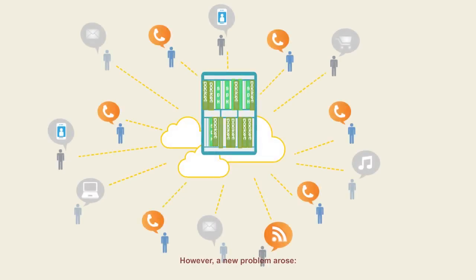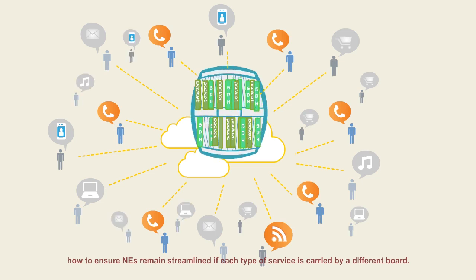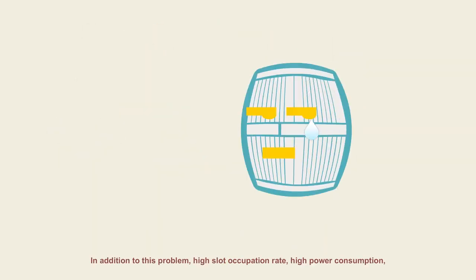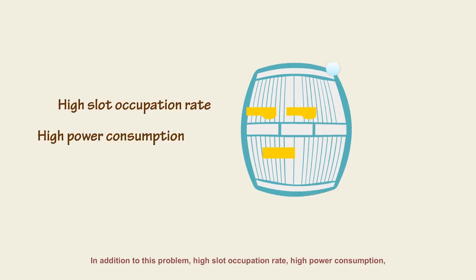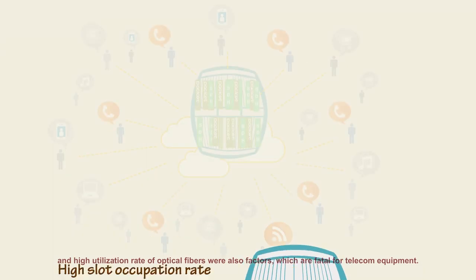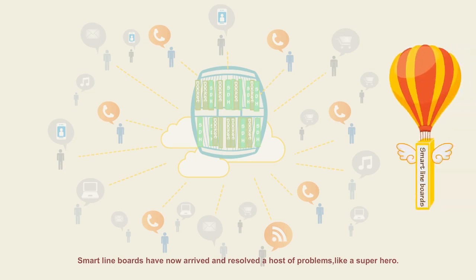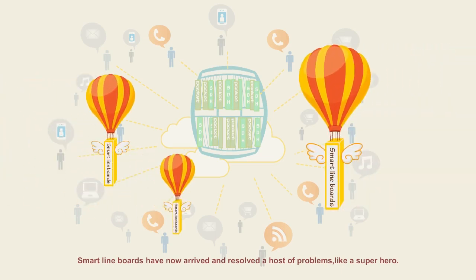However, a new problem arose: how to ensure the NE remains streamlined if each type of service is carried by a different board? In addition, high slot occupation rate, high power consumption, and high utilization rate of optical fibers were also factors, which are fatal for telecom equipment. Smart line boards have now arrived and resolved a host of problems like a superhero.